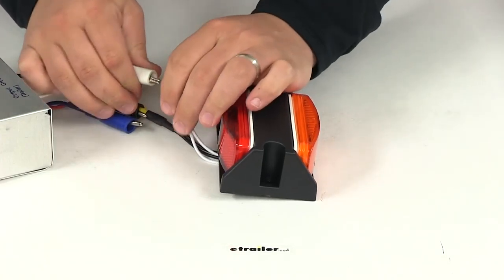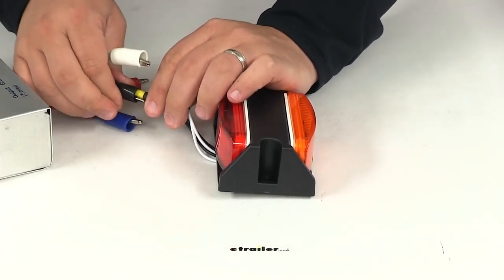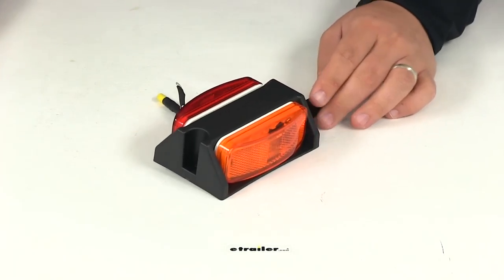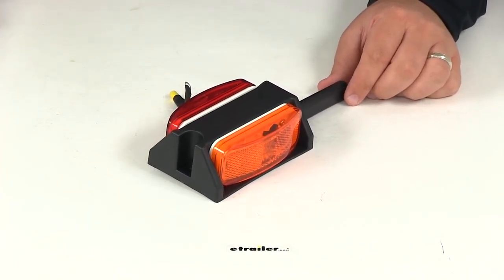That's going to do it for today's review of part number BA44FNR. This is the right-hand side fender clearance light from Optronics.